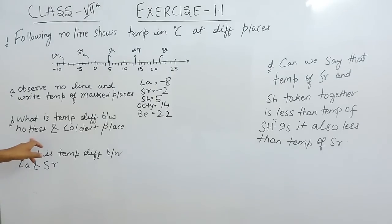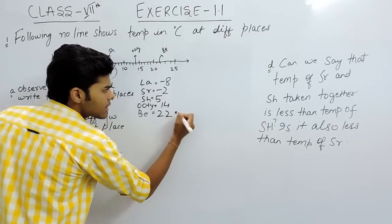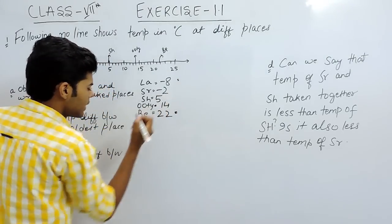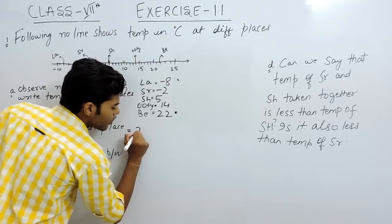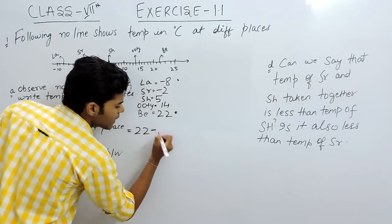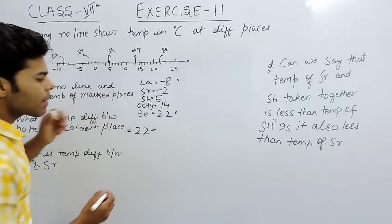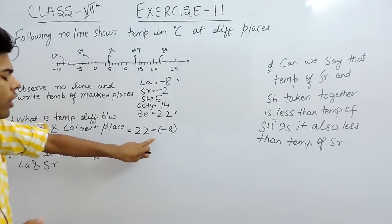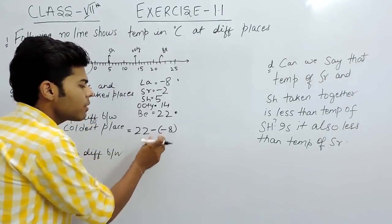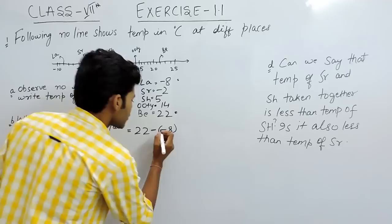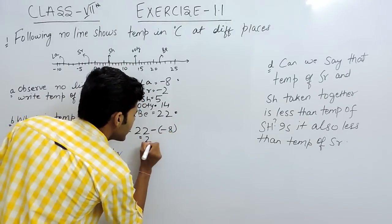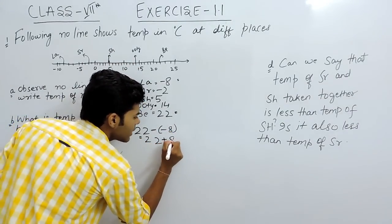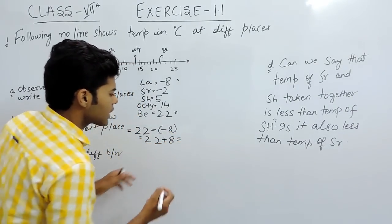Now, what is the temperature difference between the hottest and the coldest place? Hottest place is this, coldest place is this. So the temperature difference will be 22 minus minus 8. As I already told you, minus when multiplied with minus gives us plus. So we can write this as 22 plus 8 and that will be 30.